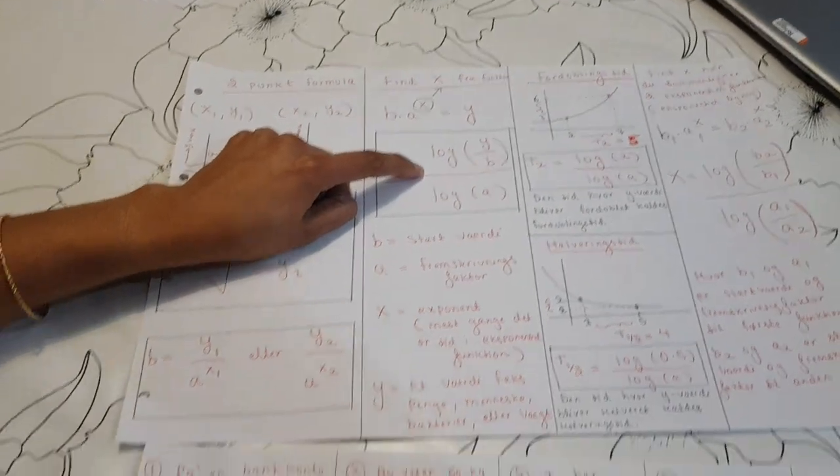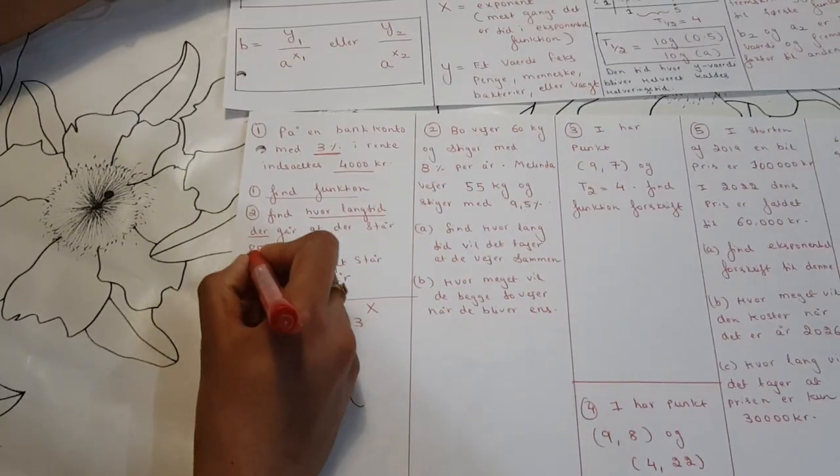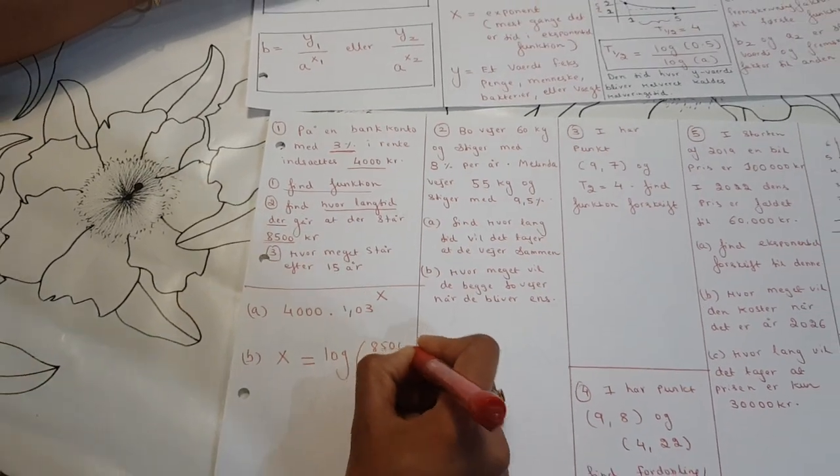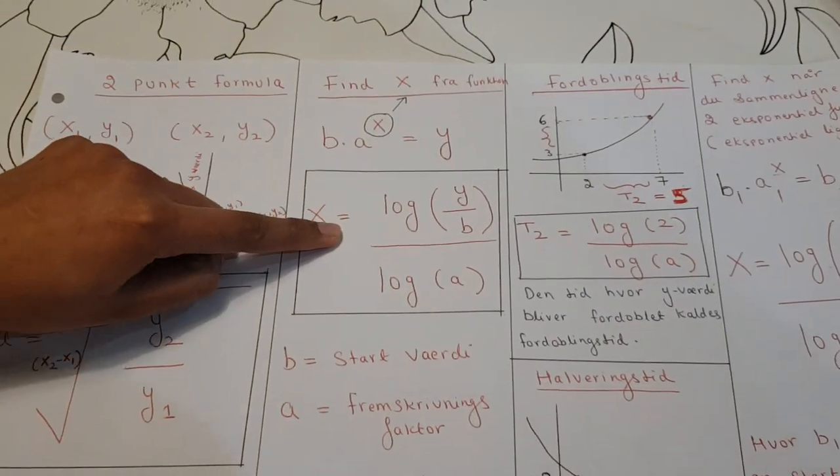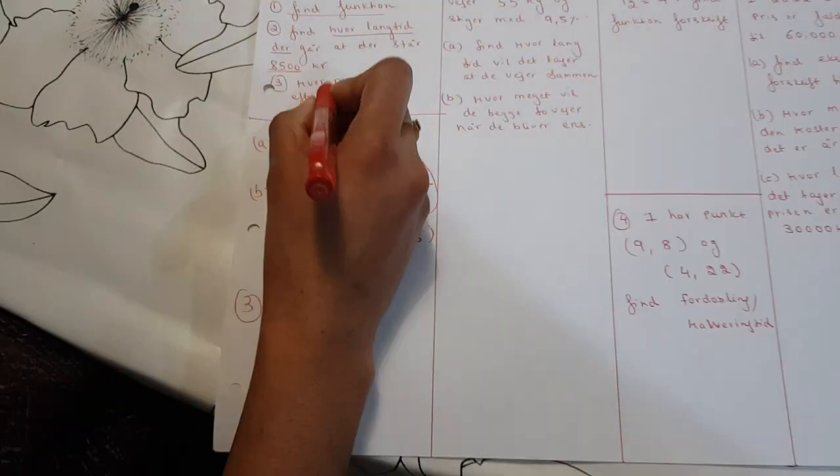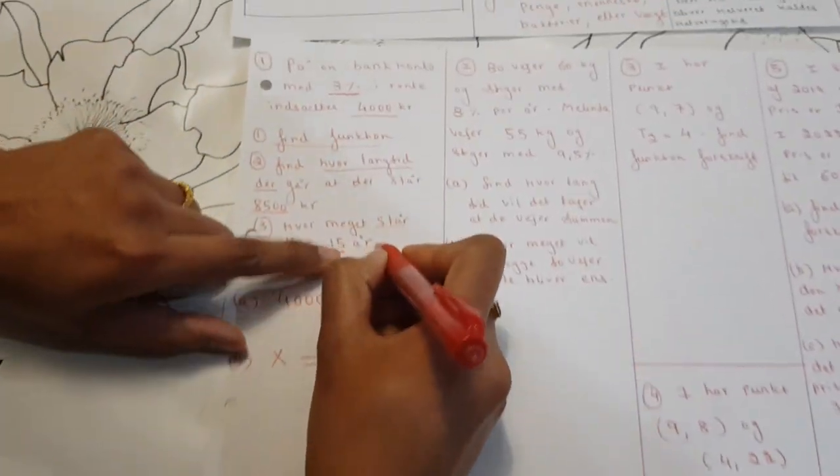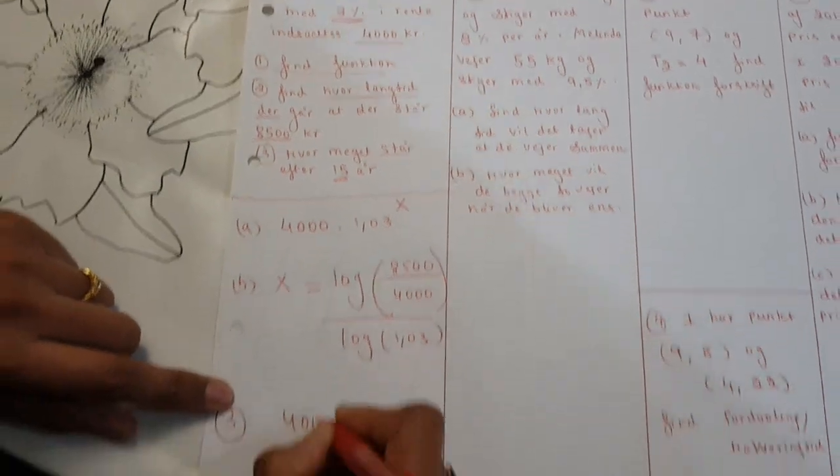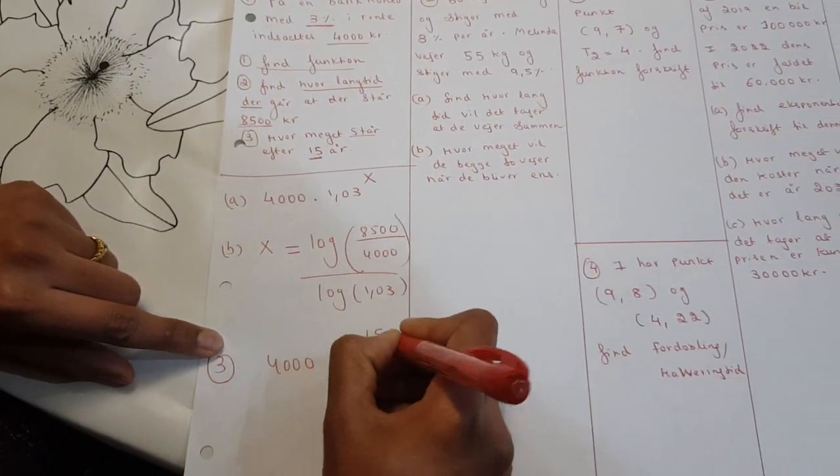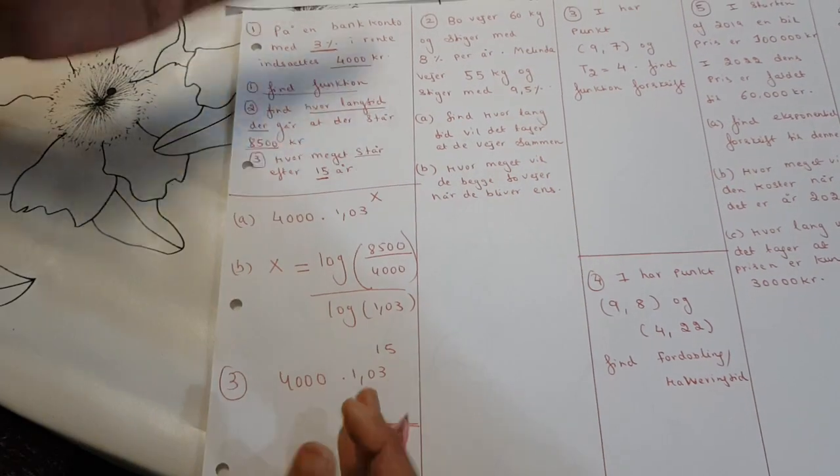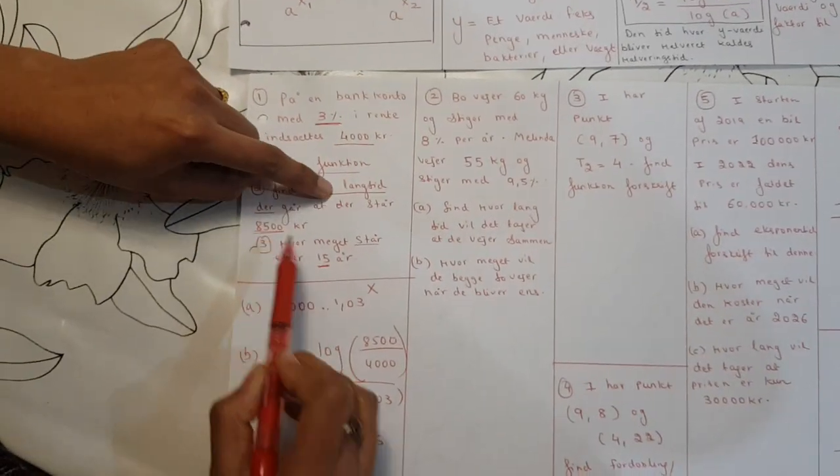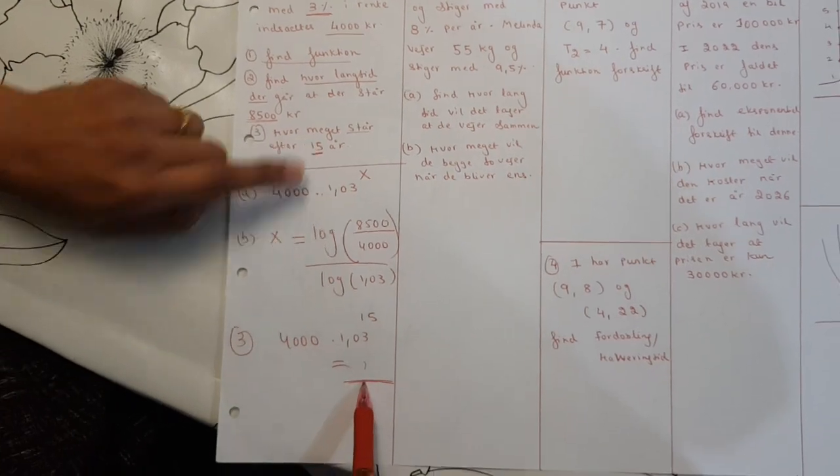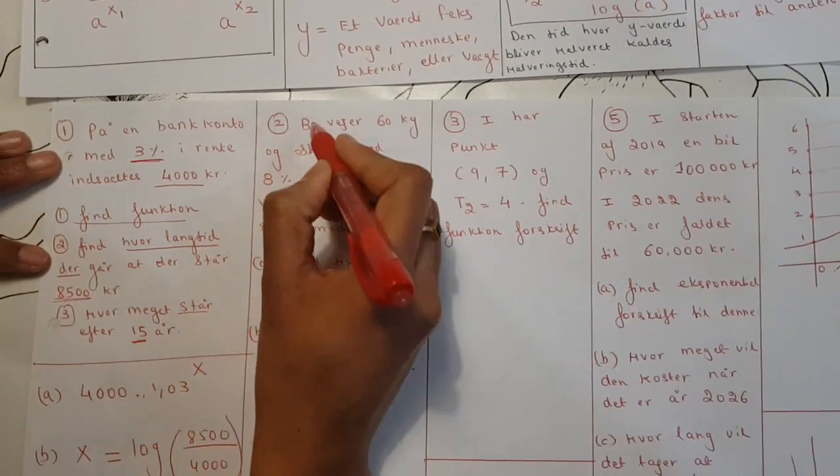So start value of two thousand with three percent growth. When you want to find the function, I'm going to see how long until you see how long until x. So use formula number two. X equals log divided by start value. The formula here, x equals the fifteen. So you use two thousand times 1.03 to the power of fifteen, and you will find how many kroner you have.